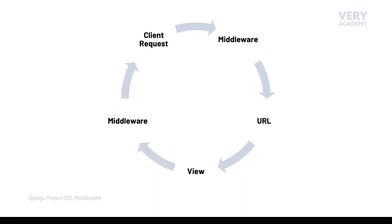Django has this concept of middleware. In the request-response cycle, the request from the client moves through the Django middleware before it hits the URL and views, and then before the response is returned to the client, it also moves through the middleware once again. So in the request and response Django cycle, the middleware is utilized or initiated twice.